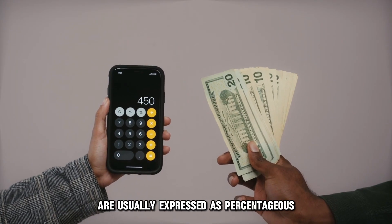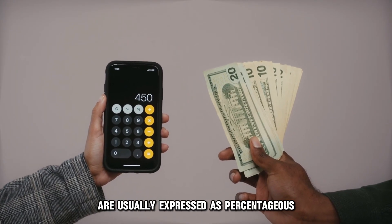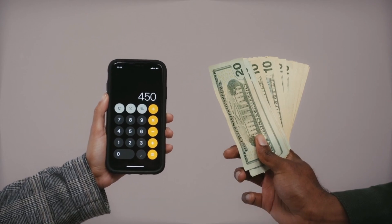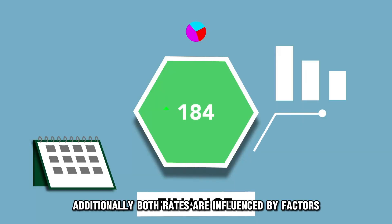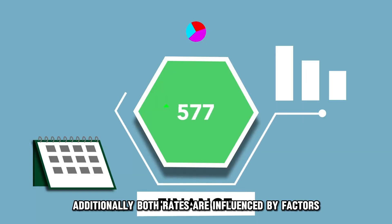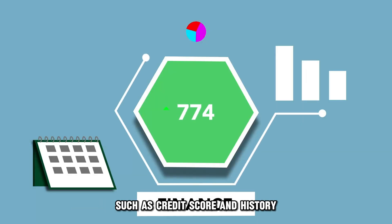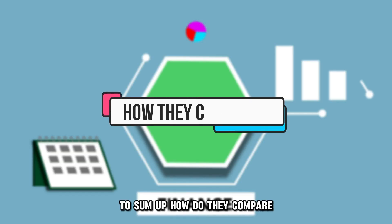Both APRs and interest rates are usually expressed as percentages. Additionally, both rates are influenced by factors such as credit score and history. To sum up, how do they compare?